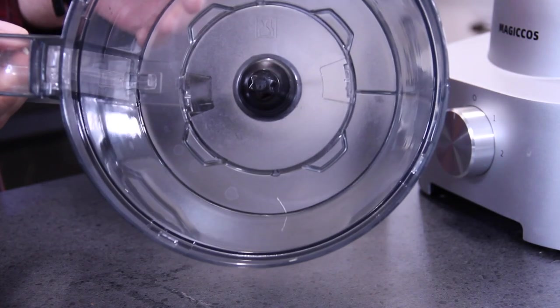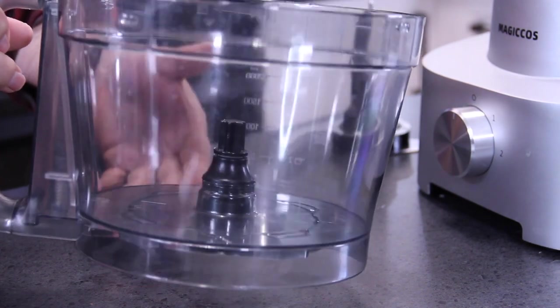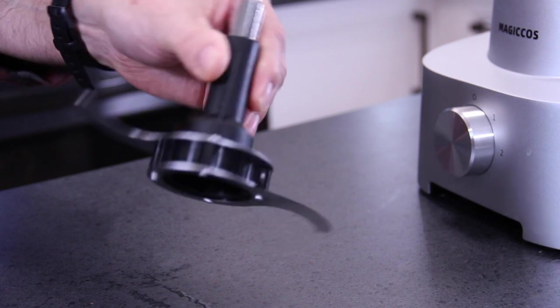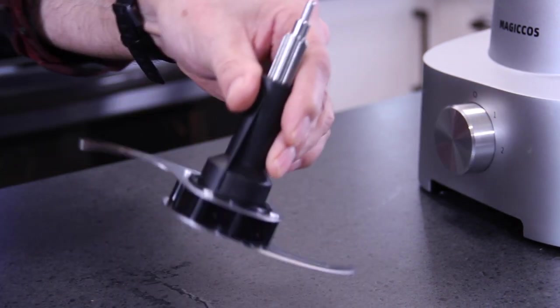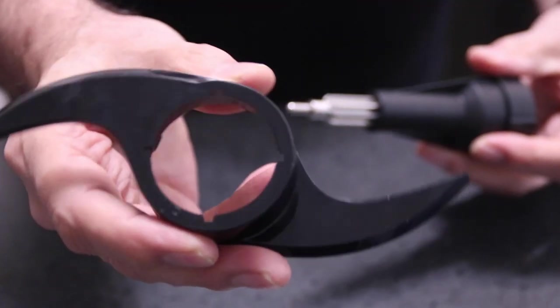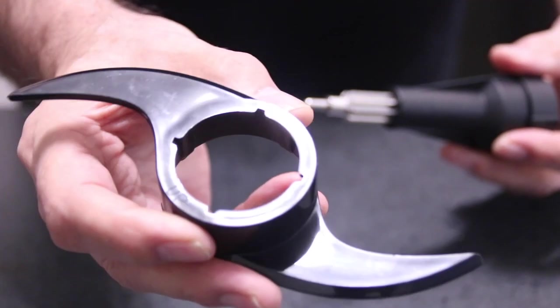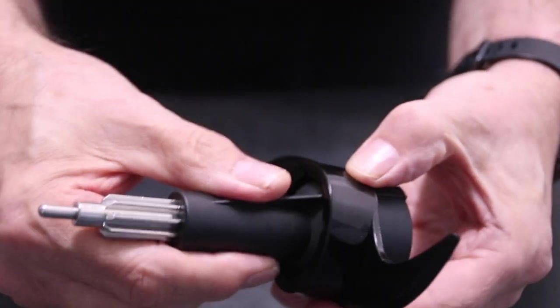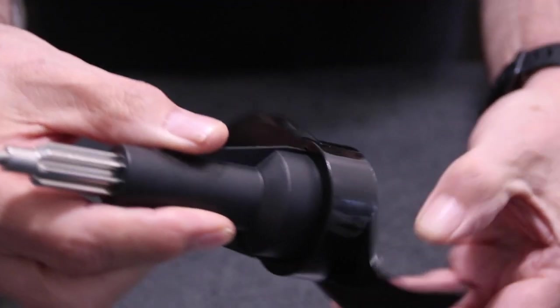Next up is the base of the drive shaft, which seems to be really well made. Then the drive shaft itself along with the chopper blade. The chopper blade is easily detachable and the unit does come with a dough blade. The dough blade attaches exactly the same way as the chopper blade. Although I didn't use it in this video, I've used it in other Magicos food processors and it works really well.